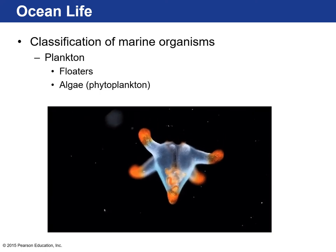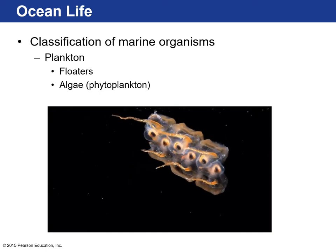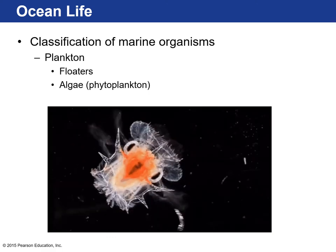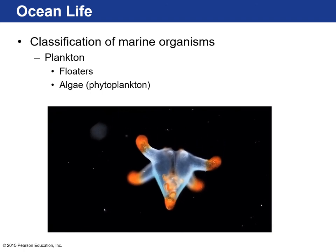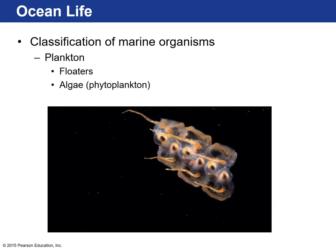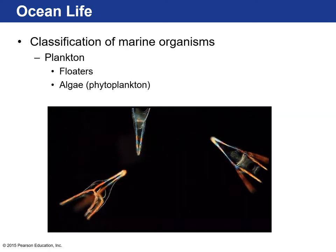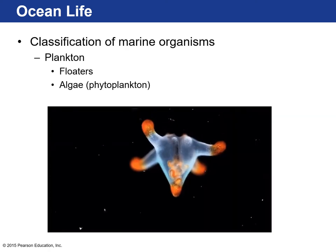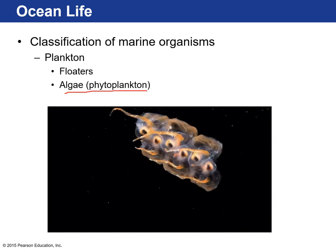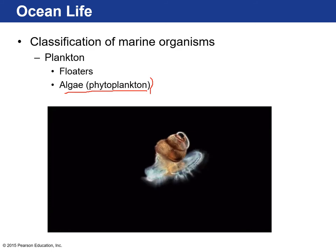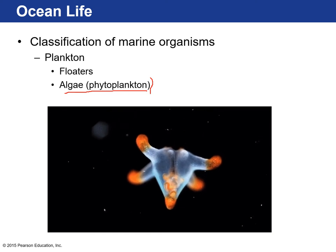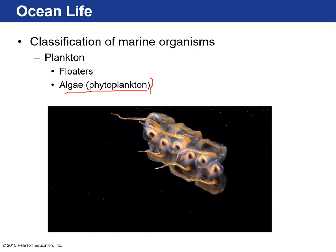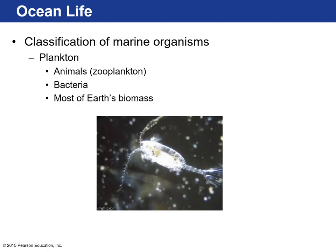Examples include algae and zooplankton — many different types including radiolarians, fish larvae, and snails. Phytoplankton, or algae, produce their own food through photosynthesis. You can think of them as the grass of the ocean — they float around on the surface and photosynthesize using sunlight striking the ocean surface.